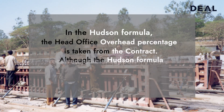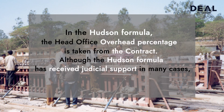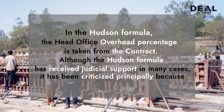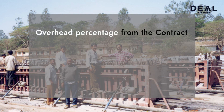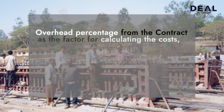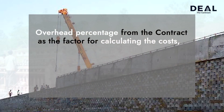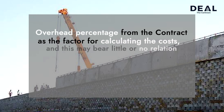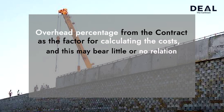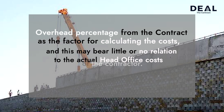Although the Hudson Formula has received judicial support in many cases, it has been criticized principally because it adopts the head office overhead percentage from the contract as the factor for calculating the cost, and this may bear little or no relation to the actual head office cost of the contractor.